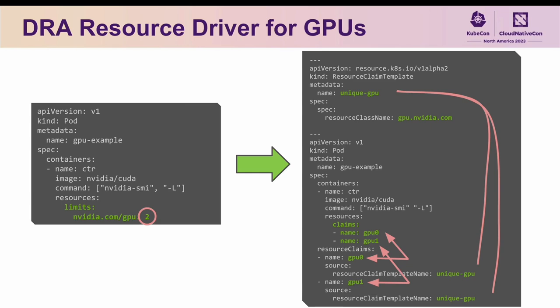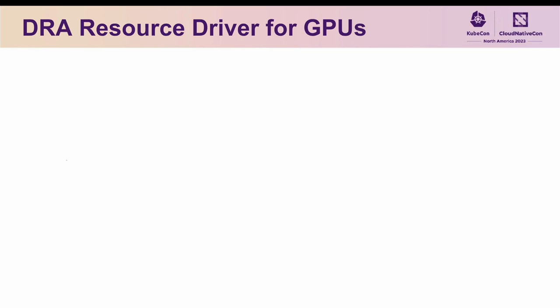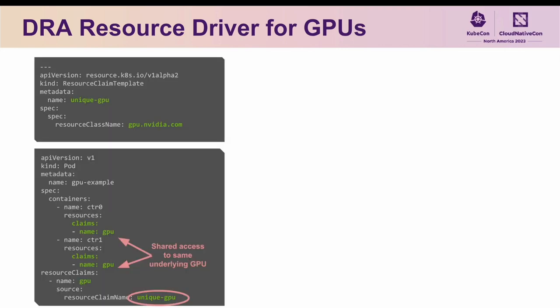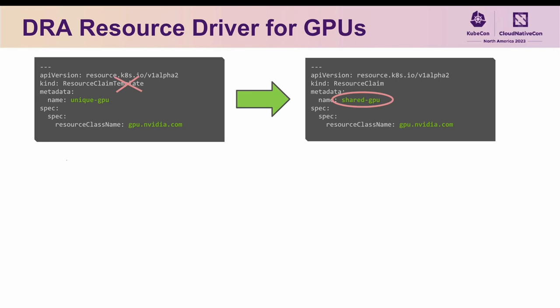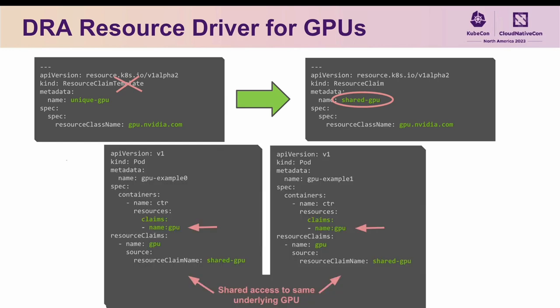This may feel overly verbose for the simple case of requesting exclusive access to a set of GPUs, but separating the declaration of the resource claim from its consumption means that we can naturally enable sharing of GPUs in a controlled way. In the example shown here, we reference a single resource claim for multiple containers within a pod, resulting in both containers getting access to the same underlying GPU. And by directly creating a global claim object, as opposed to a template, we can reference this claim from multiple pods, providing a natural mechanism for controlled GPU sharing across pods as well.